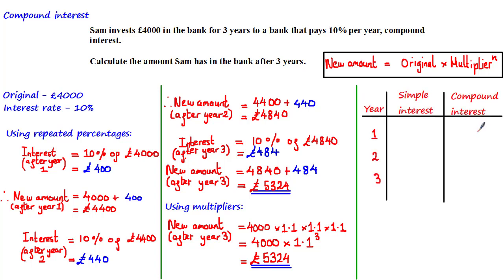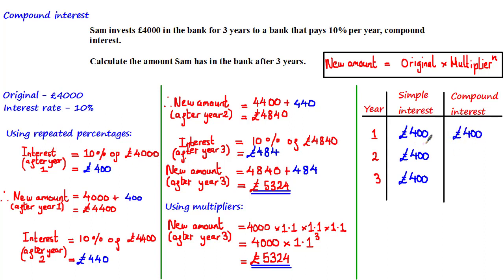Let's compare the compound interest Sam made after each year with the interest she would have made under simple interest at the same rate of 10%. With simple interest, each year produces £400 — 10% of £4,000. With compound interest: year one gives £400 (same), year two gives £440 (£40 more), and year three gives £484 (£84 more).